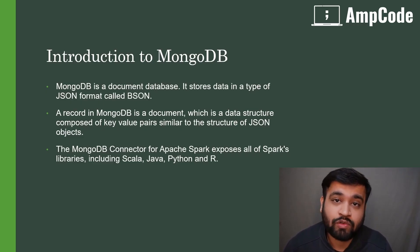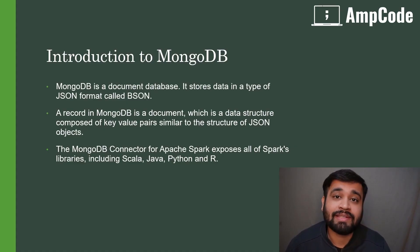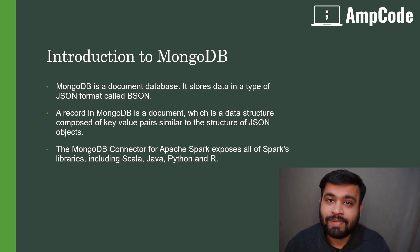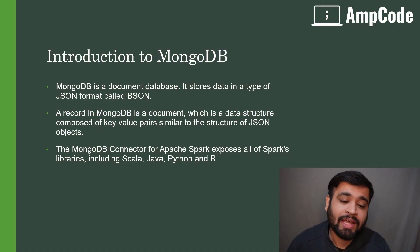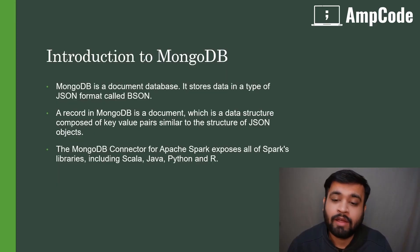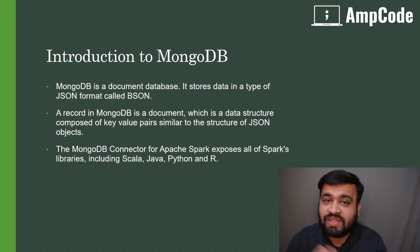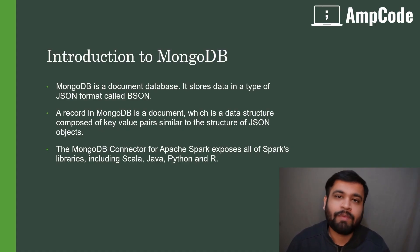NoSQL databases have different subtypes: document-based databases, column-based databases, and graph databases. In the document-based category, MongoDB is the market-leading database. It stores data in JSON format, also known as BSON, which is the native format for MongoDB. A single record in MongoDB is called a document, structured as key-value pairs, just like a JSON file.